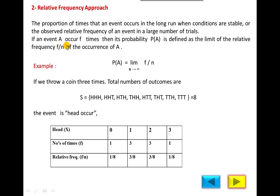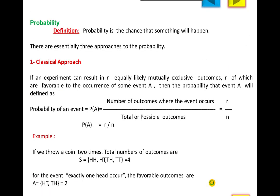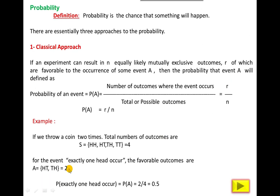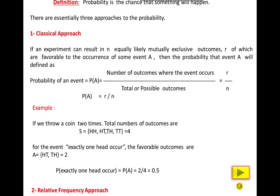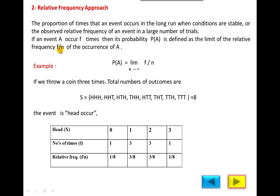The formula f/n for relative frequency is the same as the classical approach formula r/n — the notation is different but the formula is the same. The limit as n tends to infinity indicates a large number of trials. If observations are large, we convert into a frequency distribution table. Similarly here, if the number of trials is large, we convert into a table grouped by frequency and total frequency.